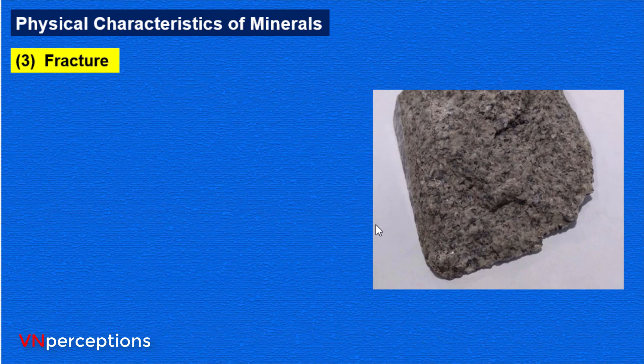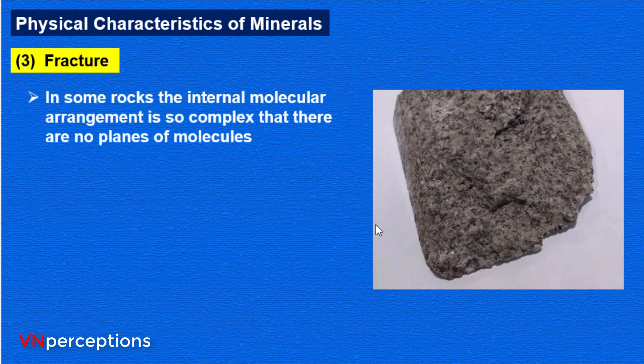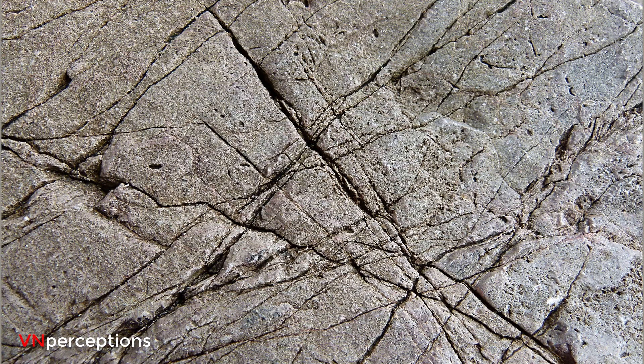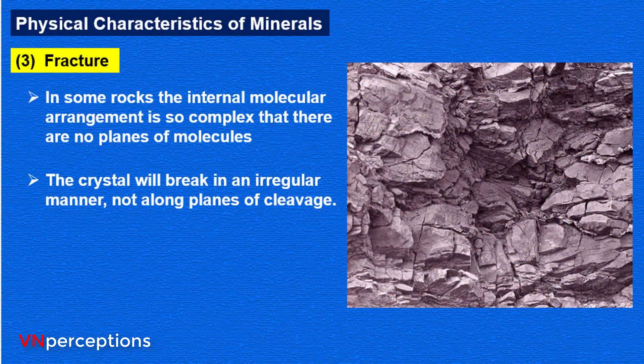Then it is fracture. Fracture is different from cleavage. In some rocks, the internal molecular arrangement is so complex that there are no planes of molecules. Fracture is a description of the way a mineral tends to break; it is different from cleavage because cleavage breaks are generally clean and flat along a specific direction. Fracture occurs in all minerals, even ones with cleavage, though many cleavage directions can diminish the appearance of the fracture surface. Different minerals break in different ways, leaving a surface that can be described as smooth, irregular, jagged, or splintery.